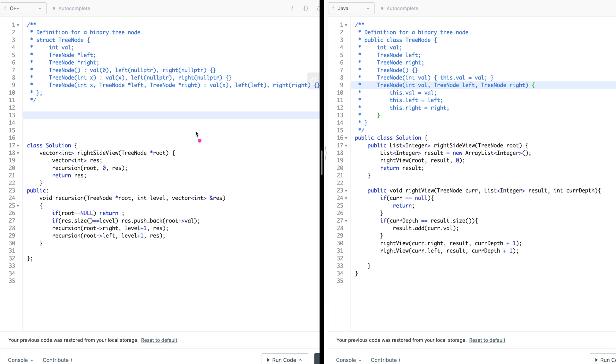So we have the C++ code on the left and the Java code on the right. The C++ code will take the root and we will have a vector and then we will call the root. The level is zero and the vector will be passed. Root is null returned. If the size is level, add it or go to the right and go to the left with level upgraded to plus one. That's how the code will look like. Simple enough.